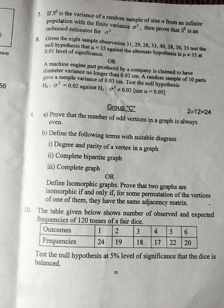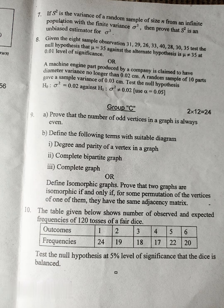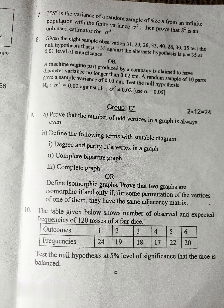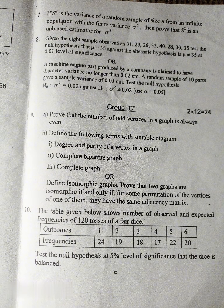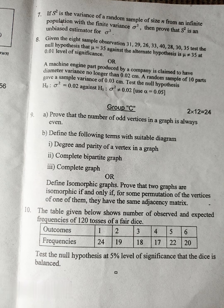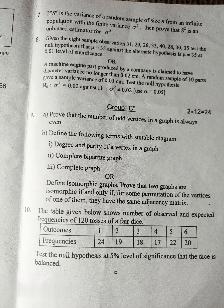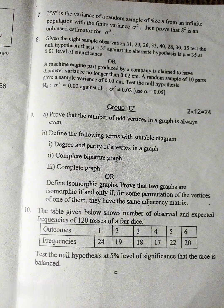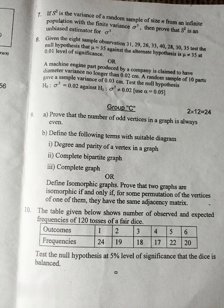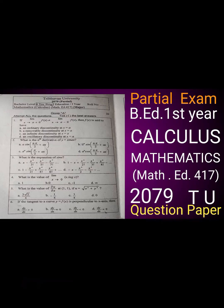Question number 10: The table given below shows number of observed and expected frequencies of 120 tosses of a fair dice. Outcomes 1, 2, 3, 4, 5, 6. Frequencies 24, 19, 18, 17, 22, 20. Test the null hypothesis at 5% level of significance that the dice is balanced.